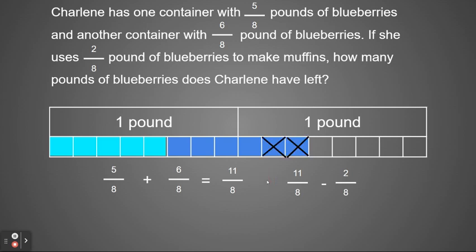So in my picture, I can cross out two eighths and 11 eighths minus two eighths would equal nine eighths because 11 minus two is nine. And looking at my picture, I now have nine eighths left.